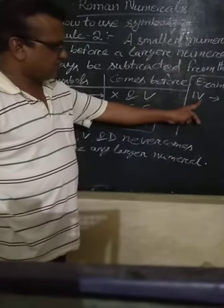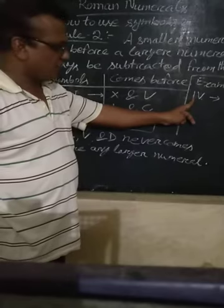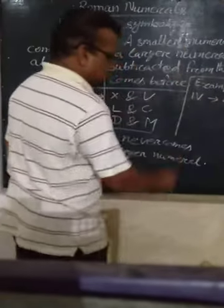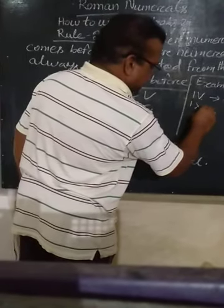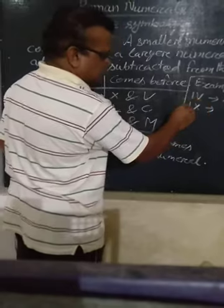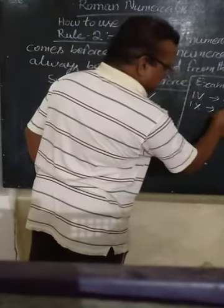The value of V is 5 and the value of I is 1. 5 minus 1, it will indicate 4. Similarly, I, X, it will indicate 10 minus 1, that means 9.